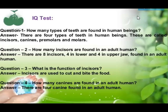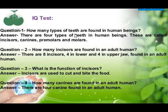Hello students. In the previous session we studied about the types of teeth, their function, and about tooth decay. Today I'm going to discuss some questions based on that topic. The first question is: how many types of teeth are found in human beings? There are four types of teeth in human beings — incisor, canine, premolar, and molar.